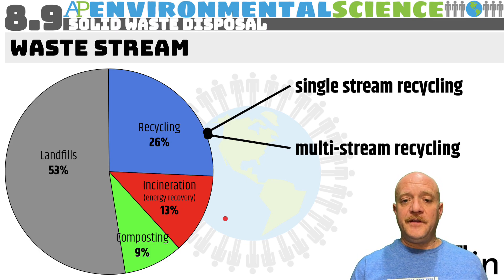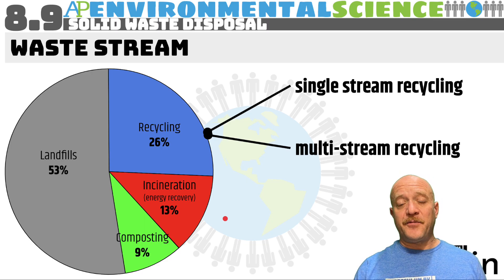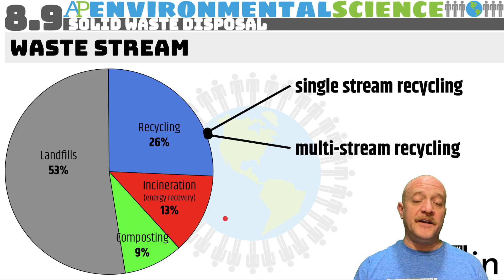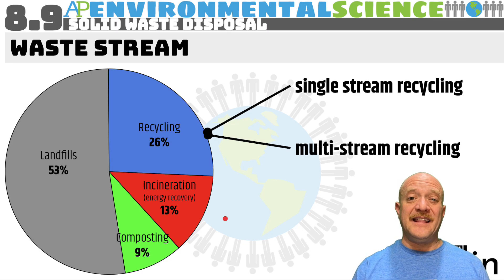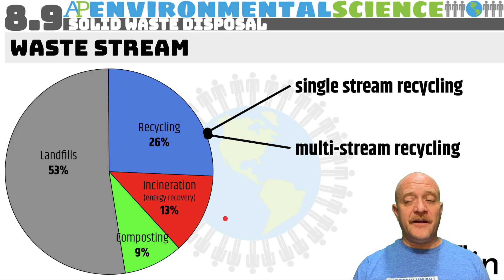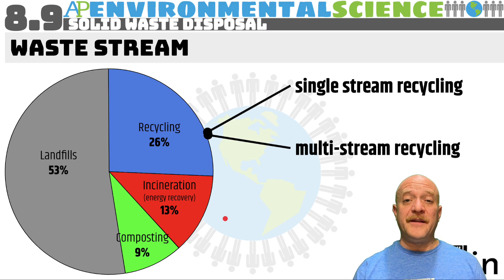Multi-stream recycling is when you separate your recyclables — paper, plastics, metals, and glass all separated. Sometimes it's just paper and then everything else; sometimes every material is separate. The drawback for multi-stream is that it's a lot less convenient from a consumer perspective, so people may just throw everything in the trash and it ends up in a landfill.